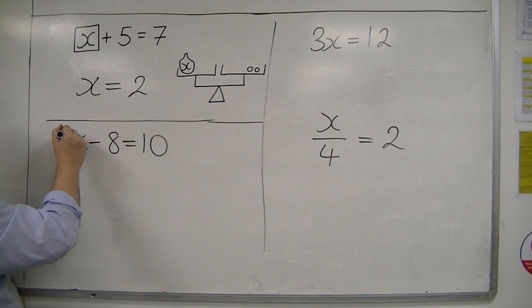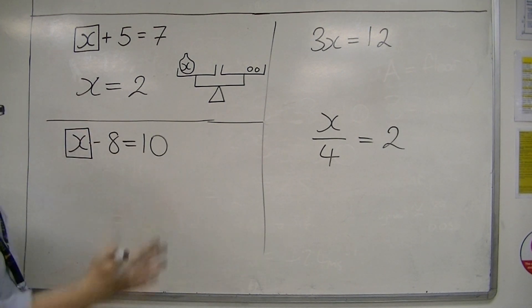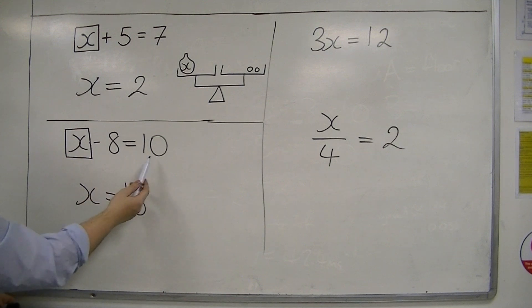So, if you then think, well, something take away eight must be ten, then that something must be eighteen, because eighteen take away eight is ten.